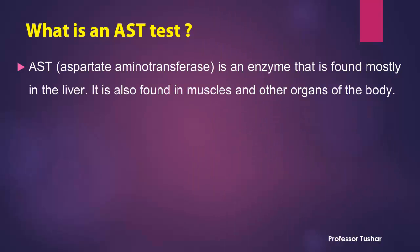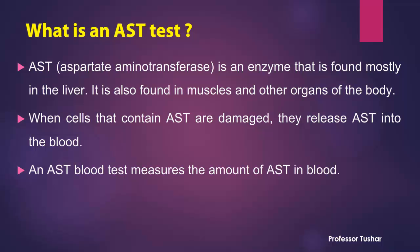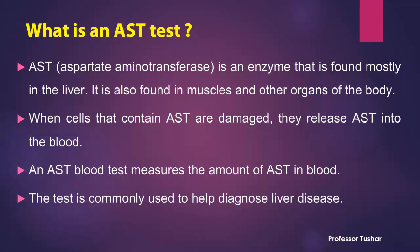AST, aspartate aminotransferase, is an enzyme that is found mostly in the liver. It is also found in muscles and other organs of the body. When cells that contain AST are damaged, they release AST into the blood. An AST blood test measures the amount of AST in blood. The test is commonly used to help diagnose liver disease.